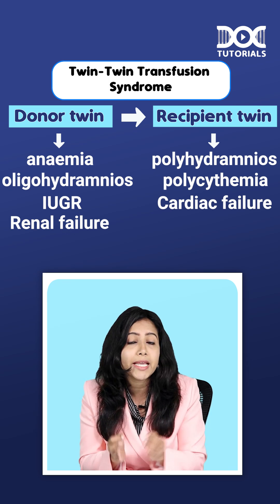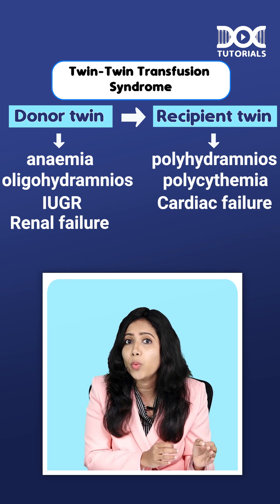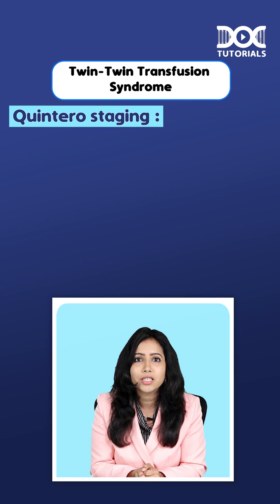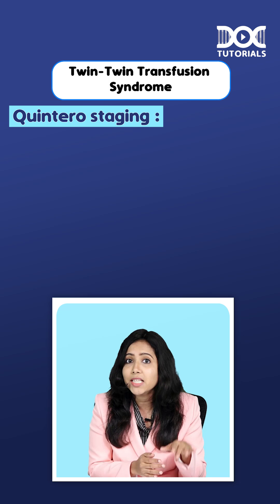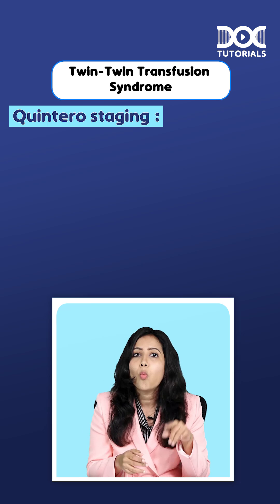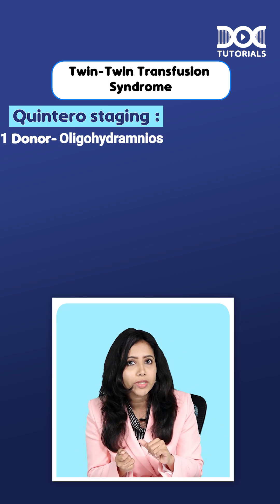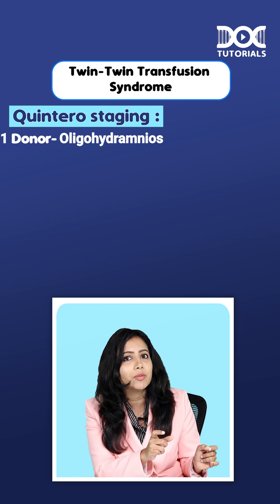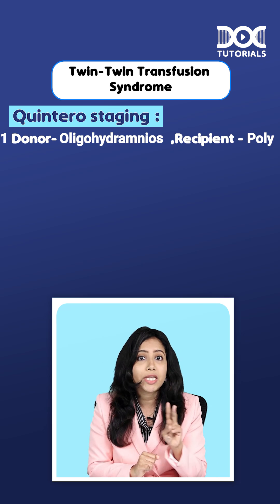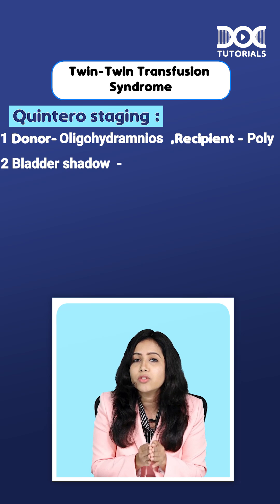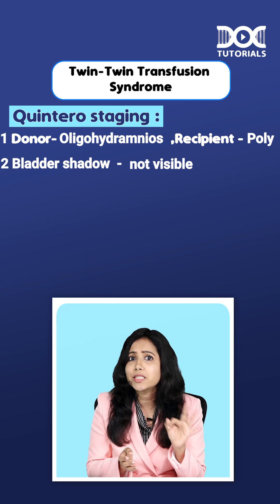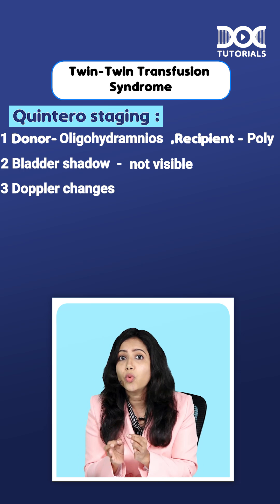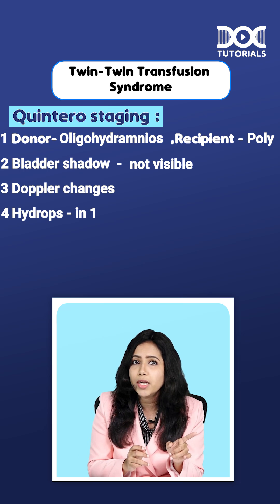TTTS can be divided into various stages using the Quintero staging classification, from one to five. Stage one: oligopoly sequence — oligohydramnios in the donor twin and polyhydramnios in the recipient twin. Stage two: the bladder shadow is not visible in the donor twin. Stage three: there are Doppler changes.